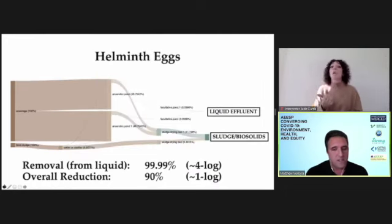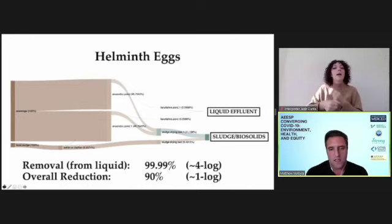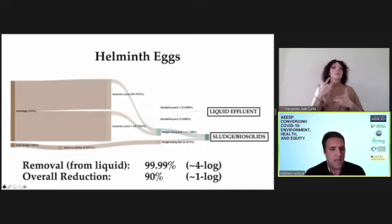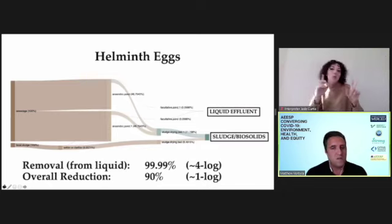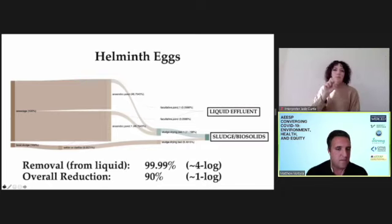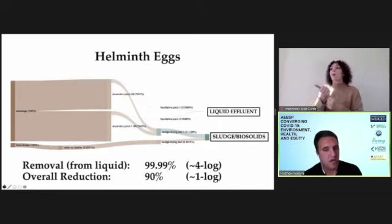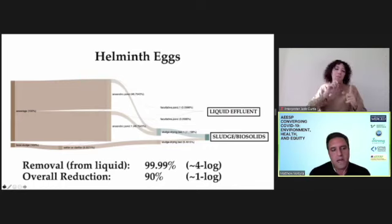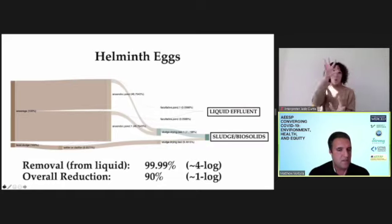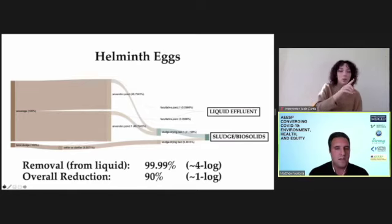Whereas other types of pathogens like helminth eggs, which cause diseases like intestinal parasites, will tend to end up more in the sludge and biosolids. And even within pathogen groups there may be differences from one to another — some viruses may tend to end up more in the sludge than others, while other viruses may end up more in the liquid. So if we compare the removal to the overall reduction, there's actually a big difference depending on whether we look at just the liquid effluent or also at the sludge and biosolids.